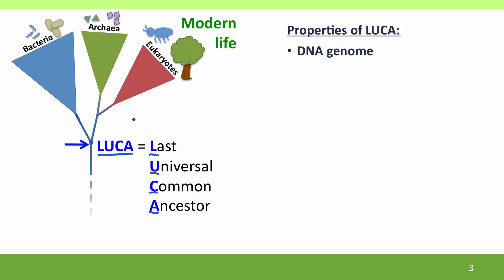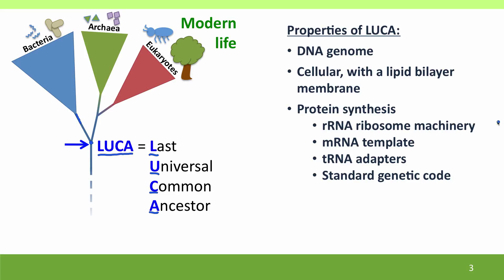We know that we all share a DNA genome, and almost certainly we inherited that from the last ancestor. All modern organisms are cellular with a lipid bilayer membrane. All modern organisms carry out protein synthesis. So LUCA must also have had ribosomal RNA based protein synthesis machinery that used instructions from messenger RNA and adapters of transfer RNA and the standard genetic code. We know that LUCA used catalysis by proteins, and we know there must have been many, many catalytic proteins because of the many modern biochemical pathways that are shared by all modern organisms and must have been present in LUCA.